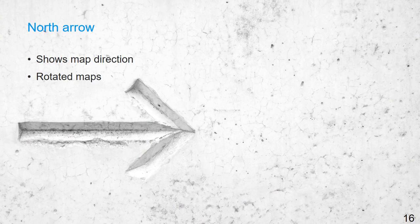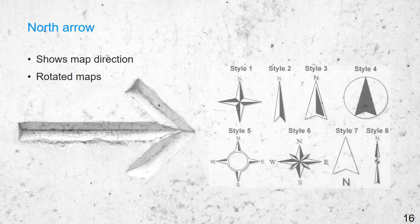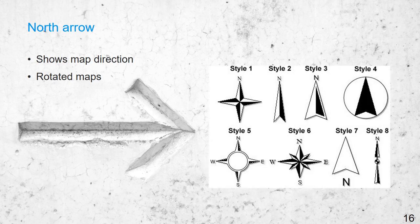For the north arrow we can choose different symbols depending on the style that we like. We can often choose to link the rotation of the map to the rotation of the north arrow, so it really reflects where the north is on the map.